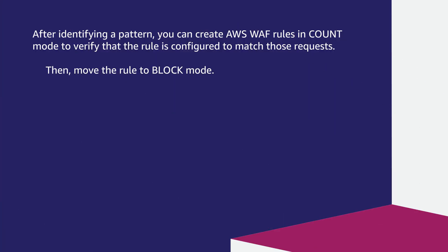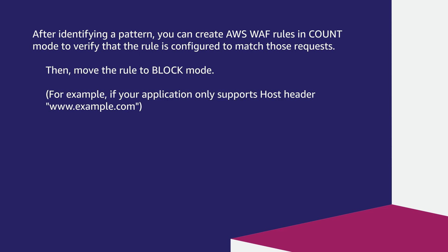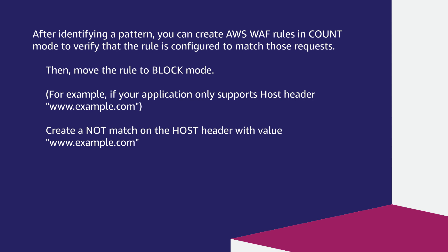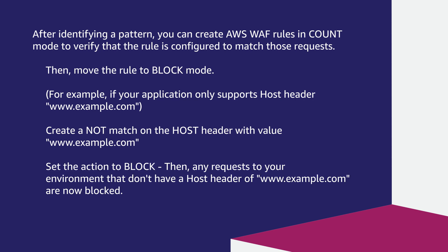After identifying a pattern, you can create AWS WAF rules in count mode to verify that the rule is configured to match those requests. Then move the rule to block mode. Create a not-match on the host header with value www.example.com and set the action to block. Then any requests to your environment that don't have a host header of www.example.com are now blocked.